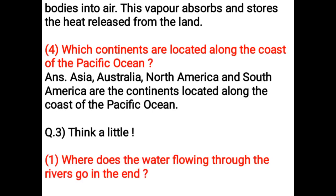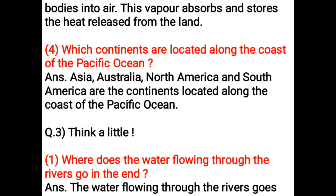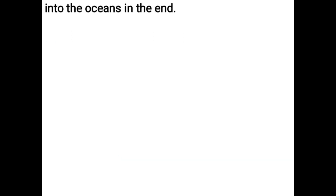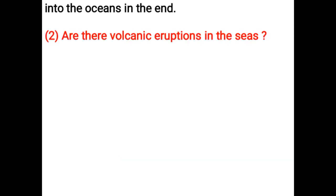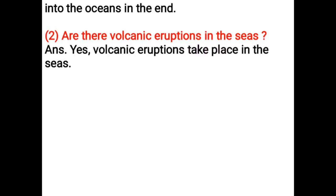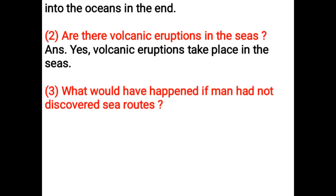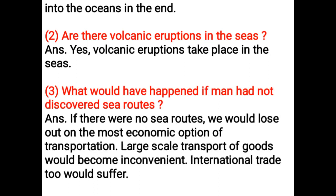Think a little. Where does the water flowing through the rivers go in the end? The water flowing through the rivers goes into the oceans in the end. Are there volcanic eruptions in the seas? Yes, volcanic eruptions take place in the seas. What would happen if man had not discovered sea routes? If there were no sea routes, we would lose out on the most economic option of transportation. Large scale transport of goods would become inconvenient. International trade too would suffer.